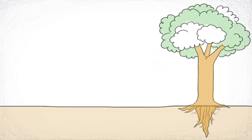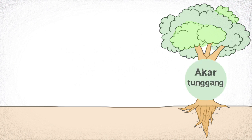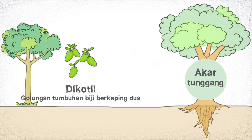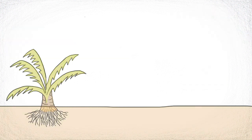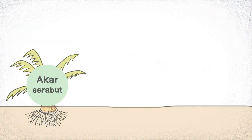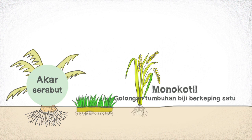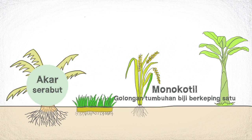Dari dua jenis akar, kita bisa menggolongkan tumbuhan ke dalam dua golongan. Tumbuhan yang memiliki akar tunggang masuk dalam golongan tumbuhan biji berkeping dua atau dikotil, contohnya pohon mangga, pohon mahoni, dan pohon belimbing. Sedangkan tumbuhan yang memiliki akar serabut masuk dalam golongan tumbuhan biji berkeping satu atau monokotil, contohnya padi, rumput, dan pohon pisang.